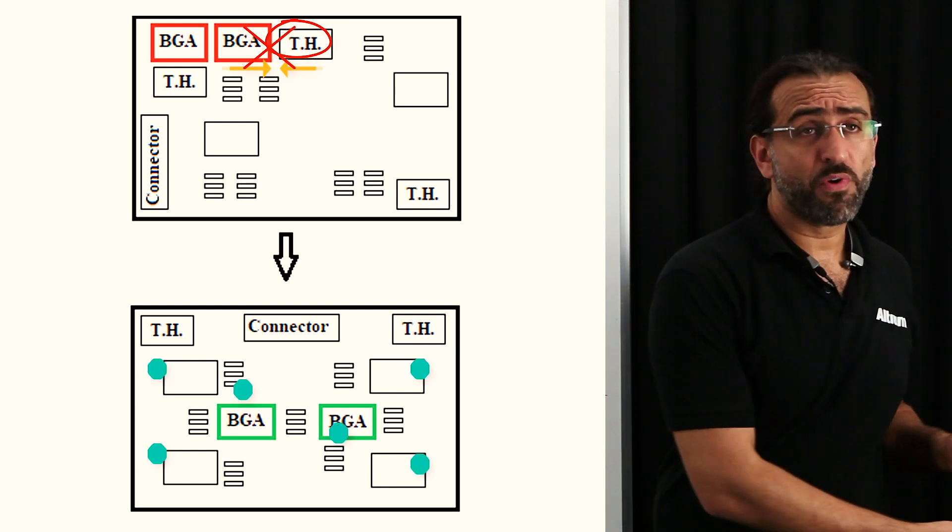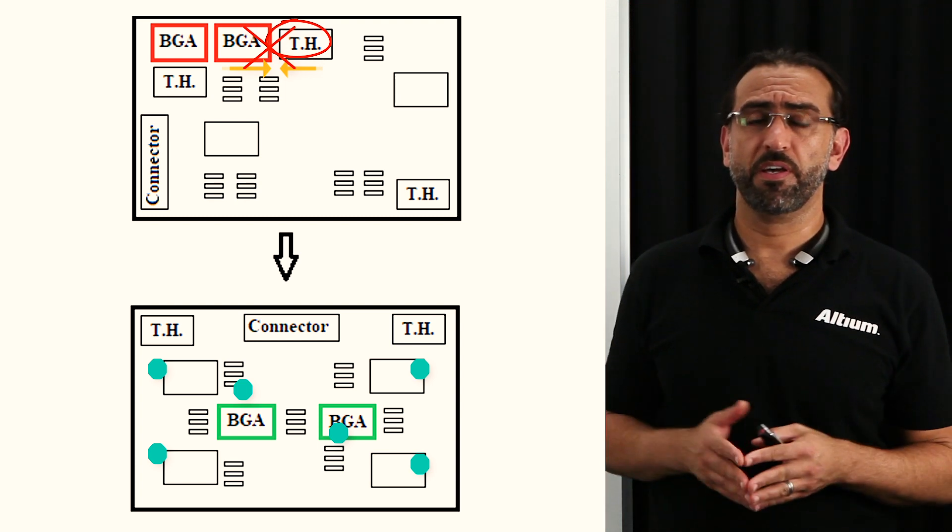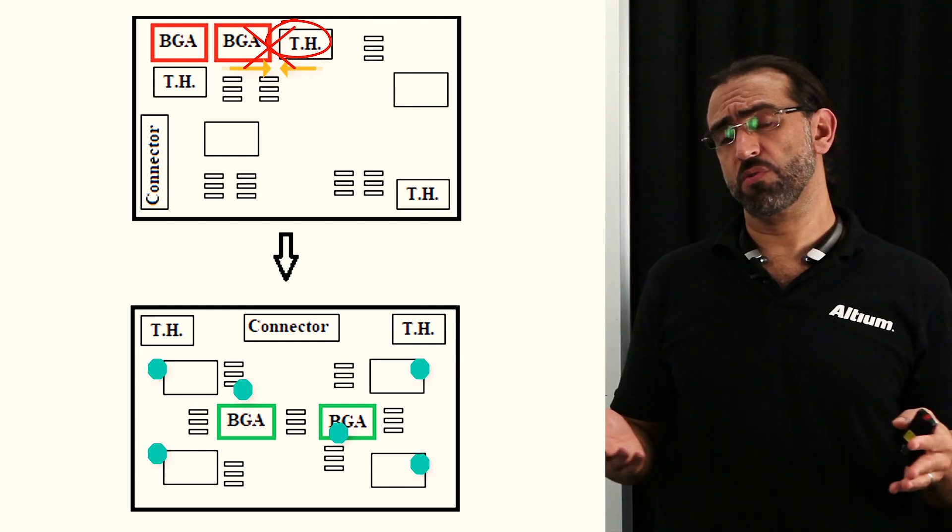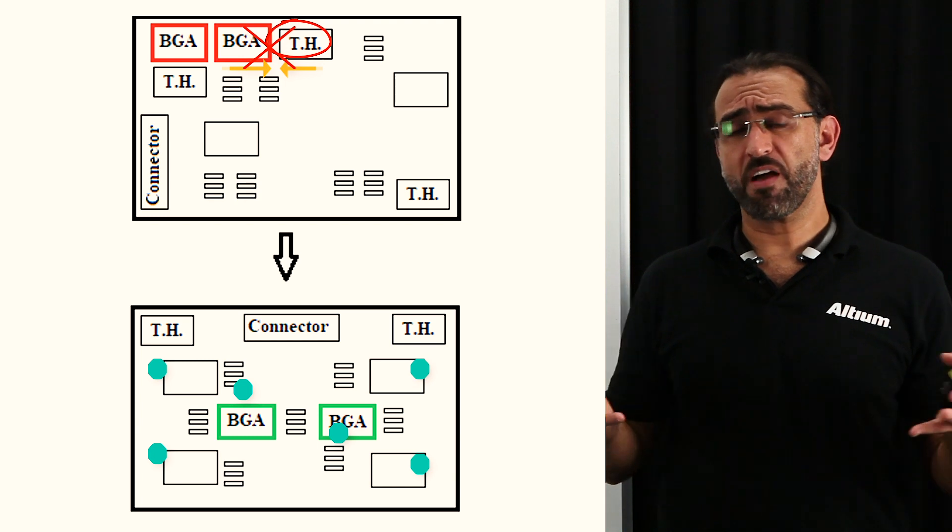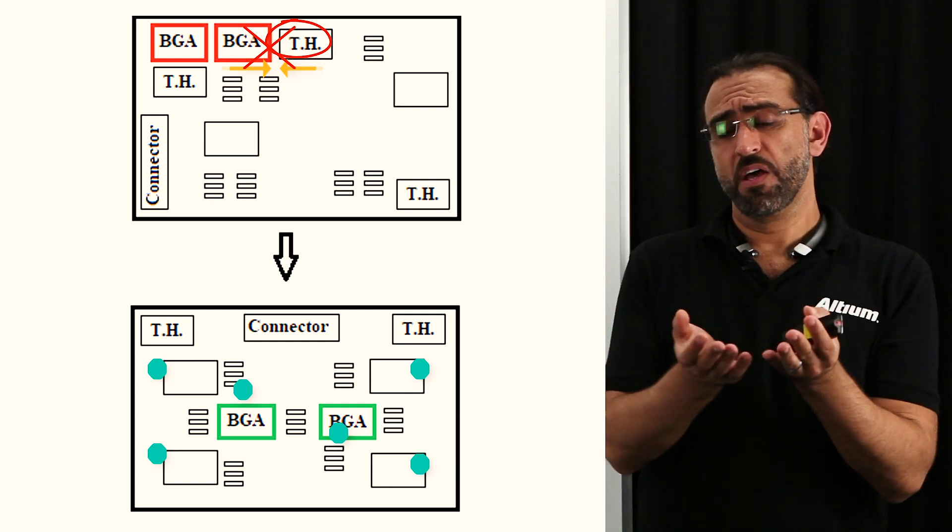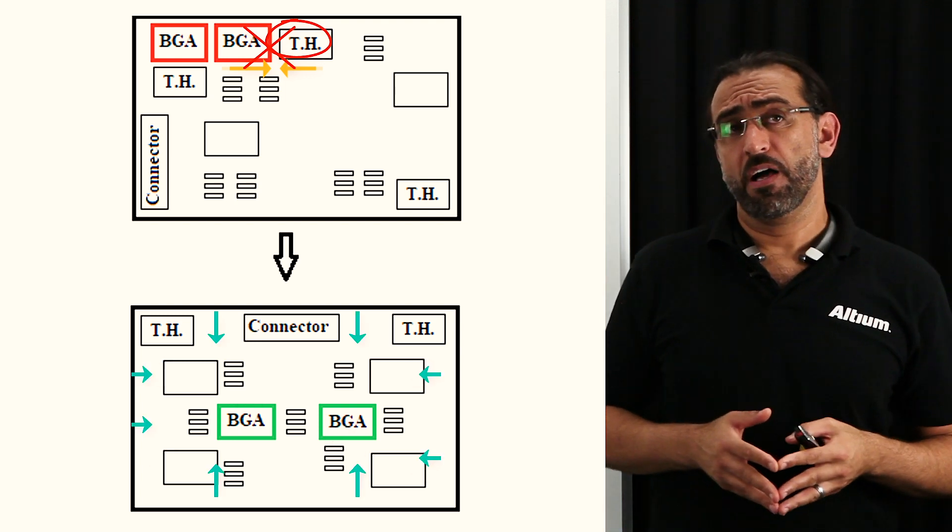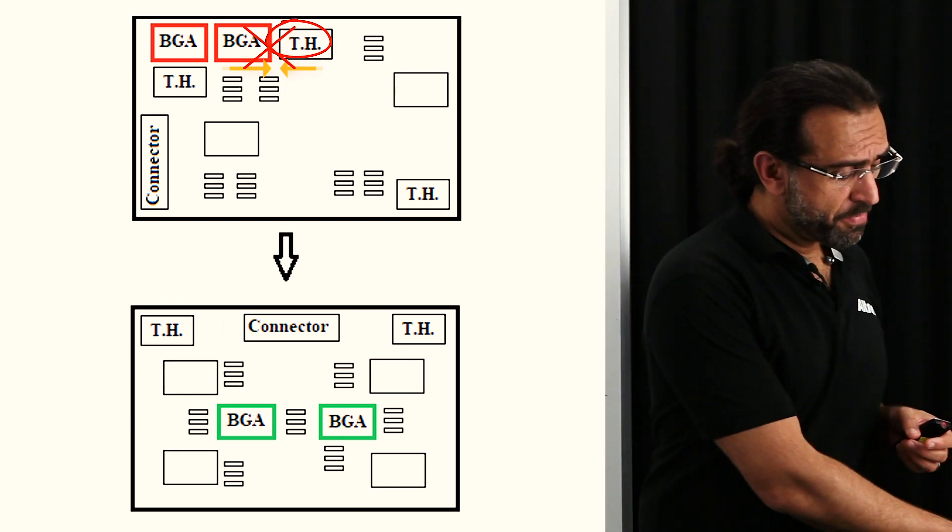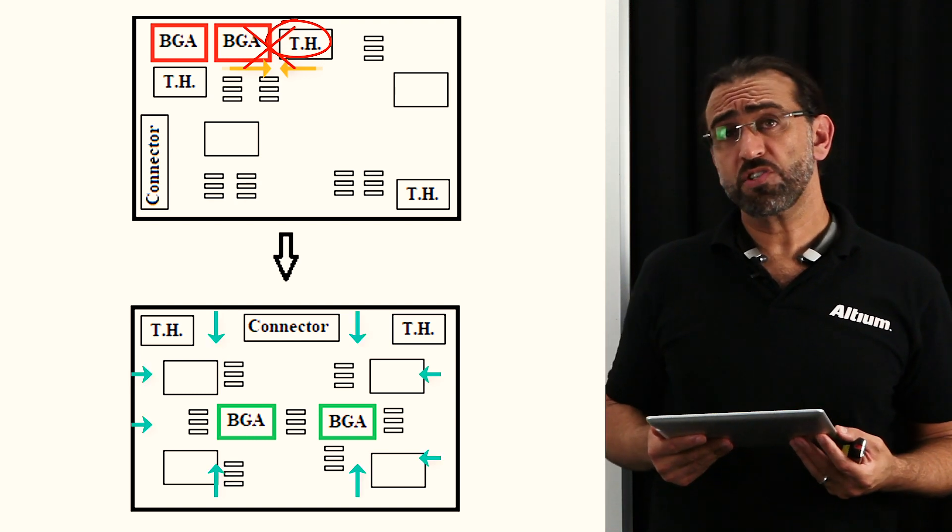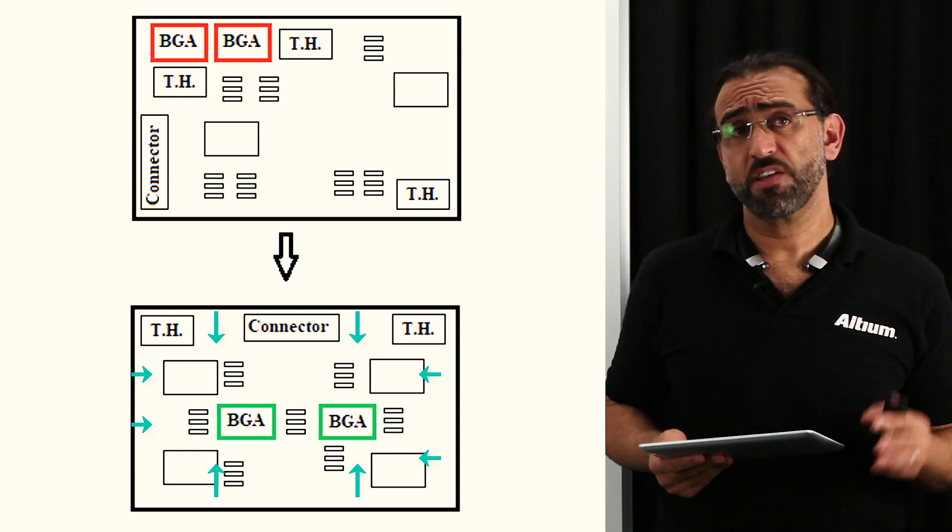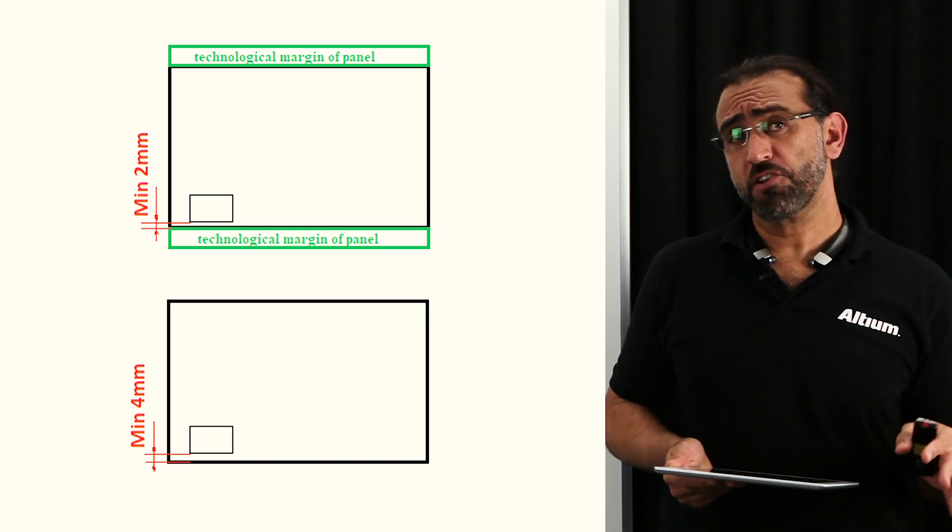It's a best practice to distribute your large components and BGAs throughout your board. And this helps keeping your weight evenly distributed, so it prevents bending of your board. Imagine if you have a lot of weight in the middle of the board, what might happen to your board, and that's what they refer to as bowing. Along the same line, always keep your large components, as you can see in the next image, and BGAs away from the board edges, as board edges have higher melting temperature than the middle of the board.